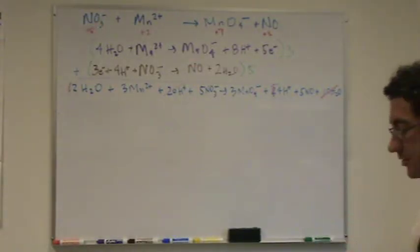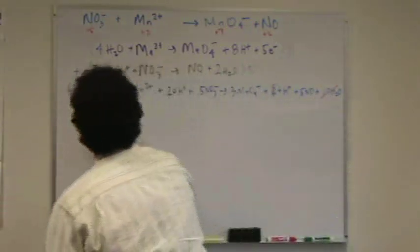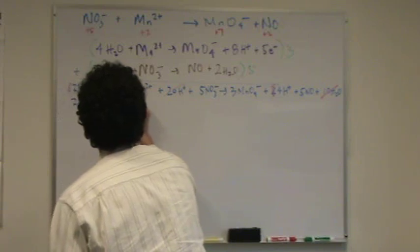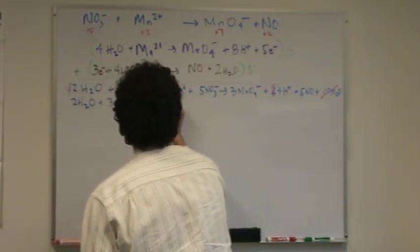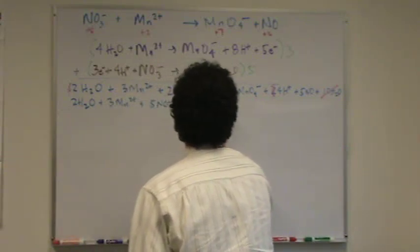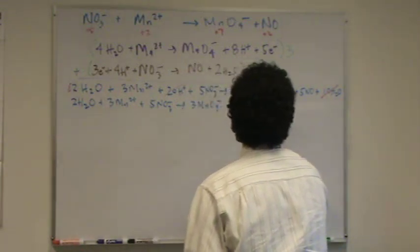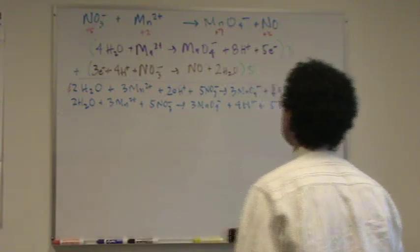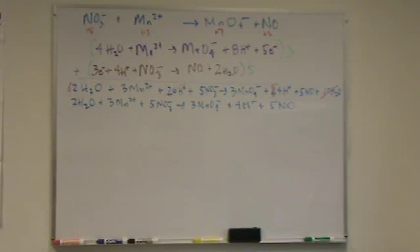So, this is going to be the acidic answer. I'll just rewrite it so it looks a little nicer. So we have two H2O plus three manganese two ion plus five nitrate ions plus three permanganate plus four H plus plus five NO. And I'll put a little star by that. This is going to be my acidic answer.